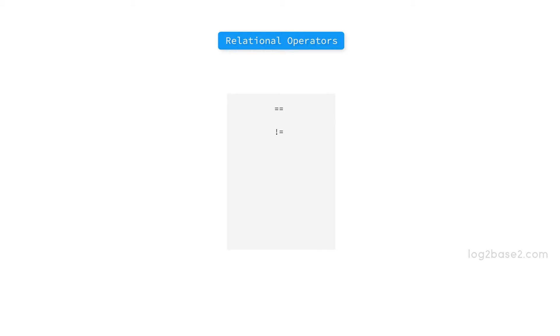Next is the less than operator (<), which checks if the left operand is less than the right operand. The expression 5 < 10 returns true, and the expression 10 < 10 returns false.